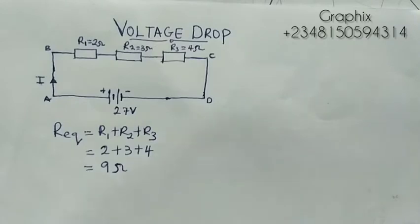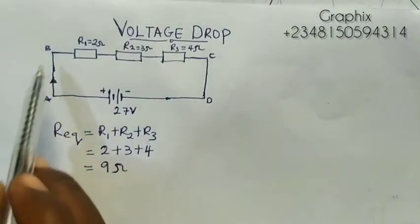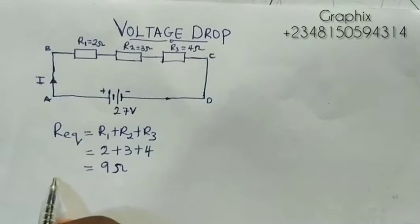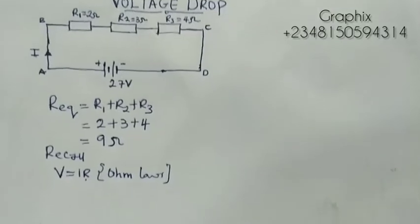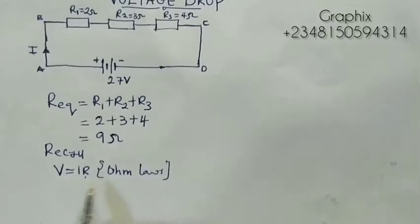Now we know very well that R1 is 2, R2 is 3, and R3 is 4, giving us 9 ohms. I want to know the current flowing through each resistor, so I'm going to recall Ohm's law. V equals IR, which states that the voltage flowing through the length of a wire is directly proportional to the current, provided resistance is constant. If I make current the subject of the formula, I equals V over R.